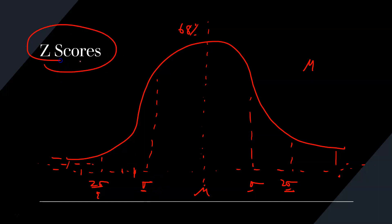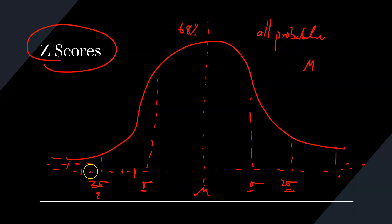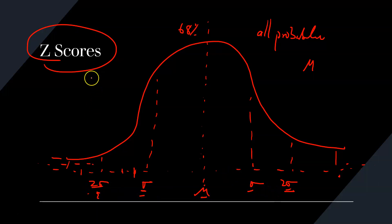And this is where the idea of Z scores comes in. So what is a Z score? A Z score gives us a way of finding the relationship between all probabilities and their standard deviations, so we can do it for anything. The whole process converts values into set figures, and those figures are called Z scores.